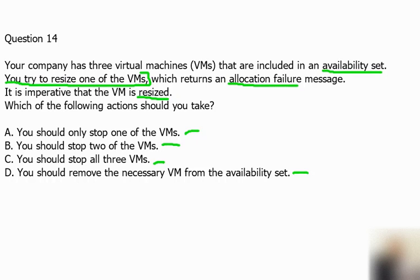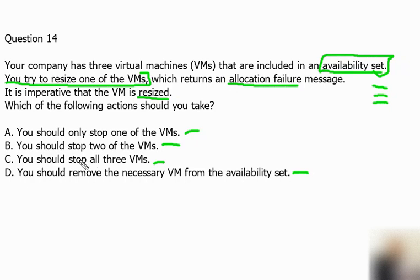The reason is that the availability set must be stopped before performing the resize operation. A size that requires different hardware means all running VMs in the availability set must be using the same physical hardware in the cluster. So we have to stop all the virtual machines in the availability set. In exam scenarios, whenever we have questions involving an availability set, all VM sizes must be the same, and if we make any change we need to stop all VMs and then start them again. So option C is the correct answer.